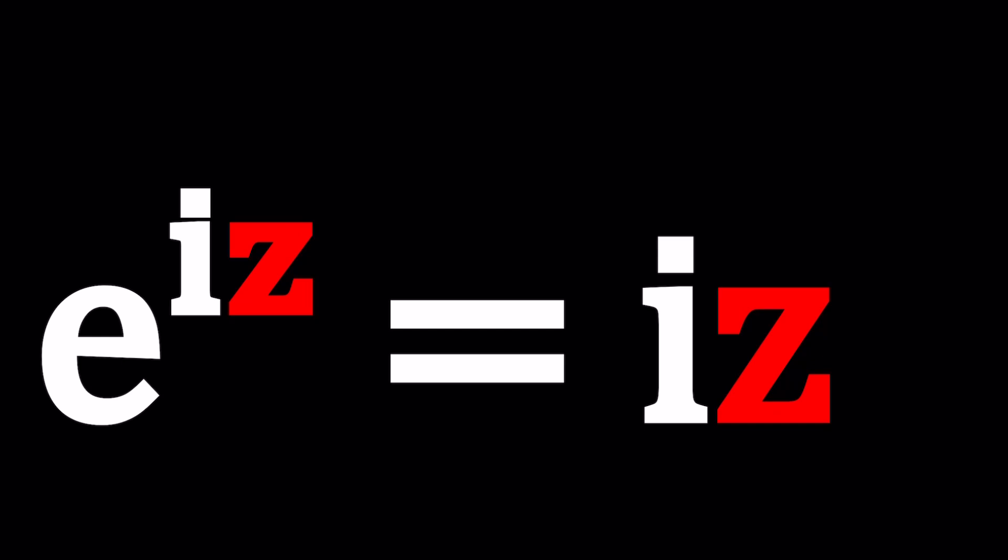So we have e to the power iz equals iz, z is a complex number, i is a constant whose square equals negative 1 and e is Euler's number. If you're new to complex numbers, go ahead and check out my lecture videos. So let's see what we can do for this type of equation.